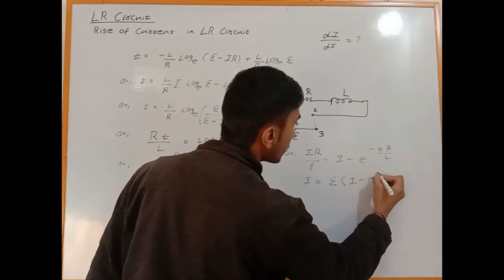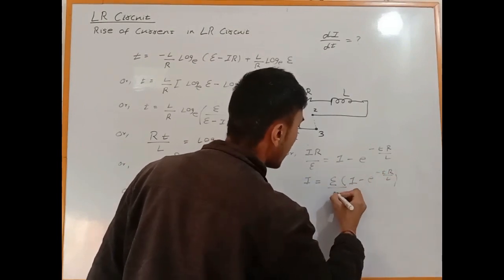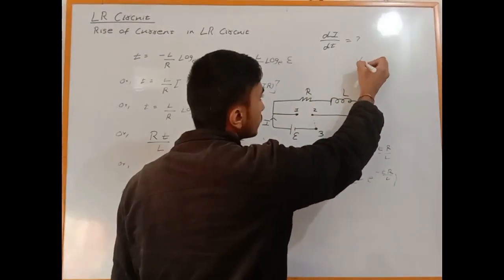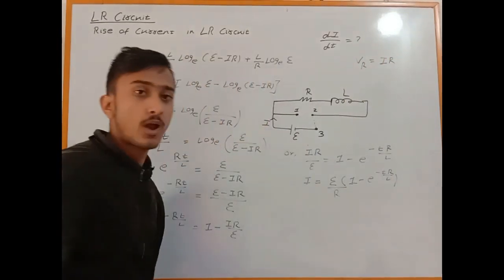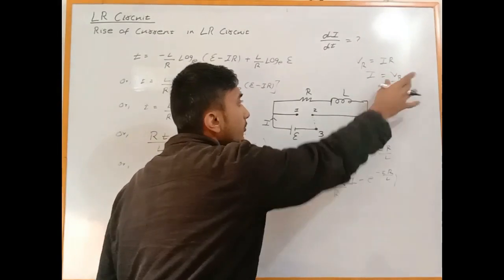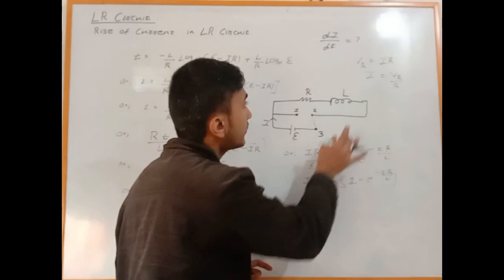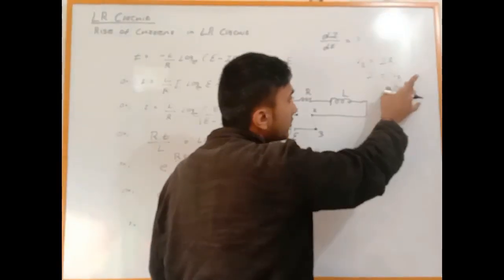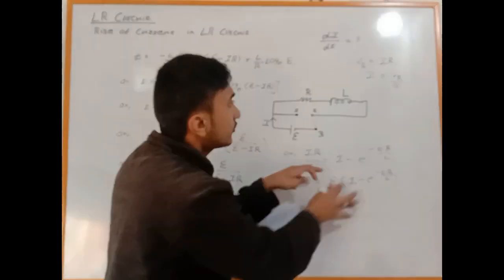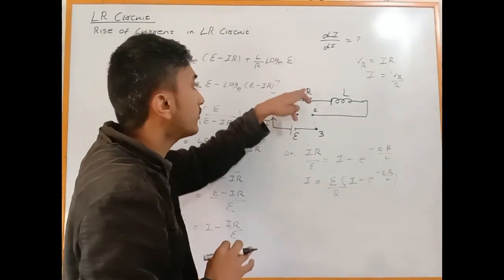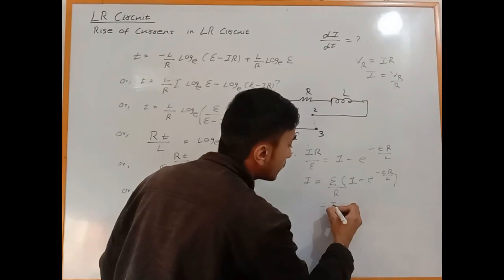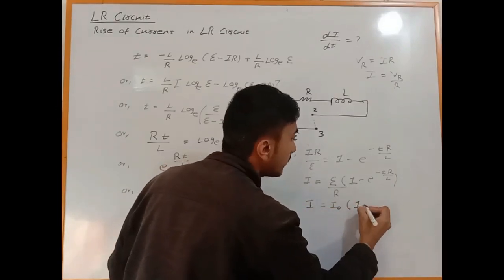Taking reciprocals and rearranging: e to the power (minus RT/L) equals (E minus IR) divided by E, which equals 1 minus IR/E. Solving for I: IR/E equals 1 minus e to the power (minus TR/L). Therefore, I equals (E/R) times (1 minus e to the power minus TR/L). Here E/R is the maximum current I_not.